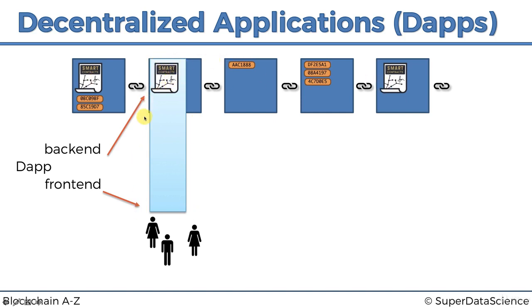So this is an application — it uses a smart contract as a way to interact with the blockchain, to put things on the blockchain and take things from it. Then there's a front end for people to interact with. That's what decentralized applications are: they use smart contracts to interact with the blockchain and allow users to interact with the application itself.